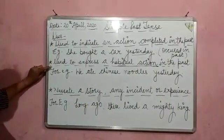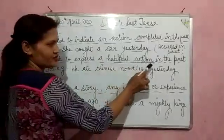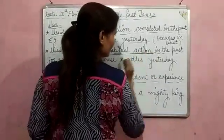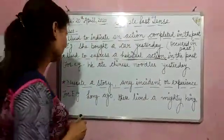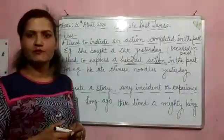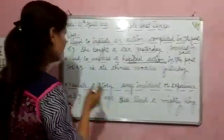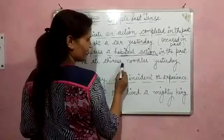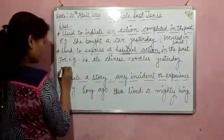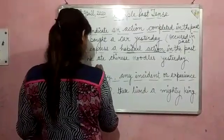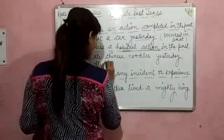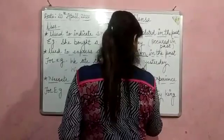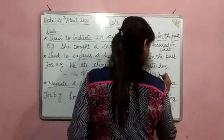Simple past tense is also used to express a habitual action in the past. As you all know, habitual action is used in present tense as well, but there is a lot of difference between present and past tense. For example, for past tense: 'we ate Chinese noodles yesterday.' And for present tense: 'we often eat Chinese noodles.'